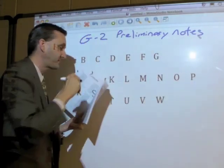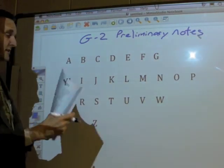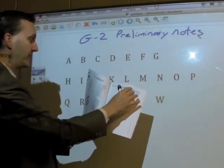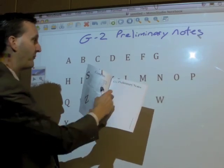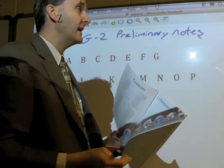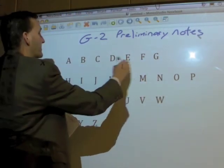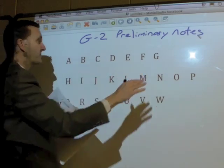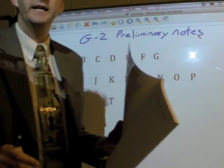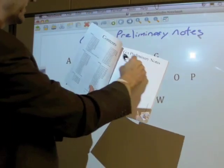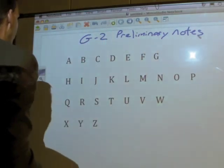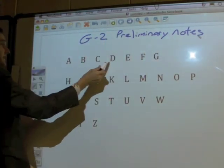The first part of the notes, we're going to take up about half of the page here to write out the alphabet. You're going to write it out like this, in this order, please, and with some space in between each one so you can take extra notes like I will be doing today. So, in the G2 Preliminary Notes, the first upper half of this page, you'll write: A, B, C, D, E, F, G...